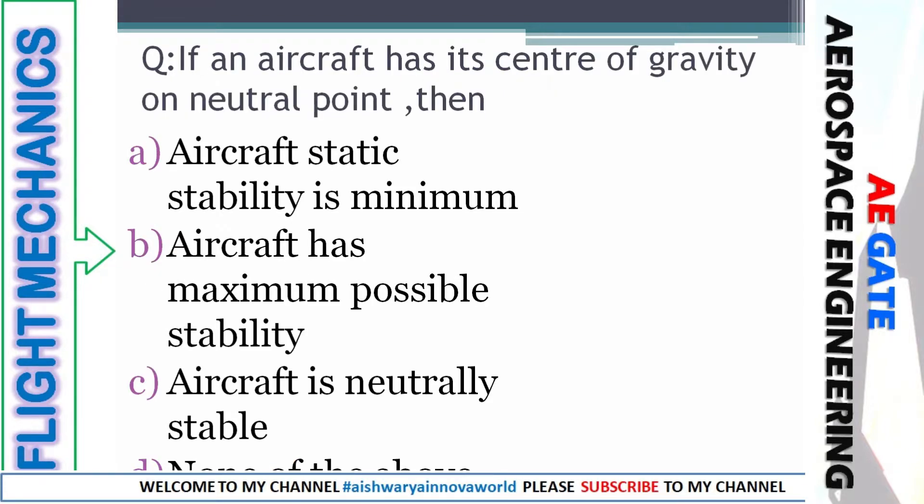Second question: if an aircraft has its center of gravity at the neutral point, then — the aircraft's static stability is minimum; the aircraft has maximum possible stability; the aircraft is neutrally stable; or none of the above.